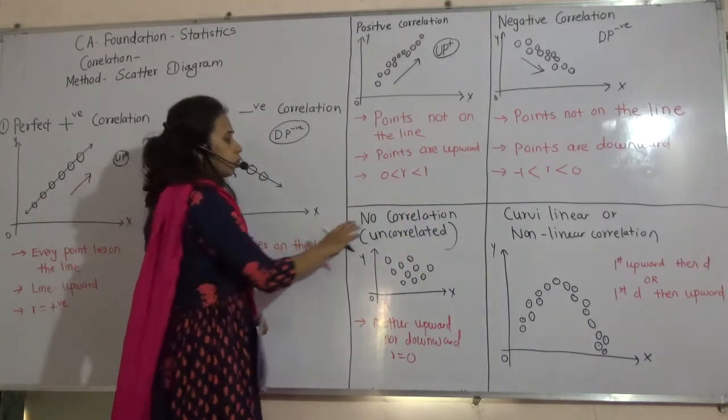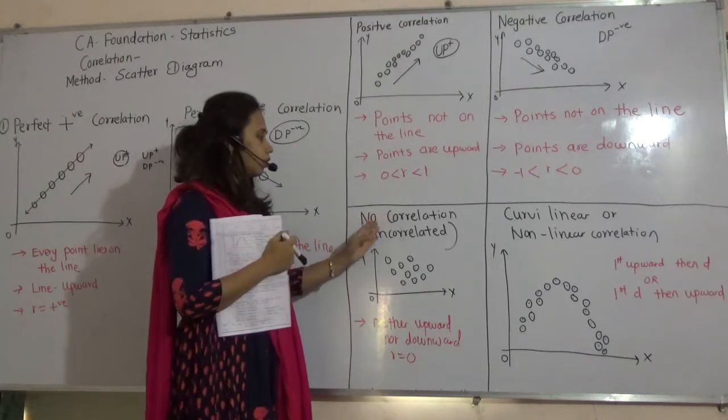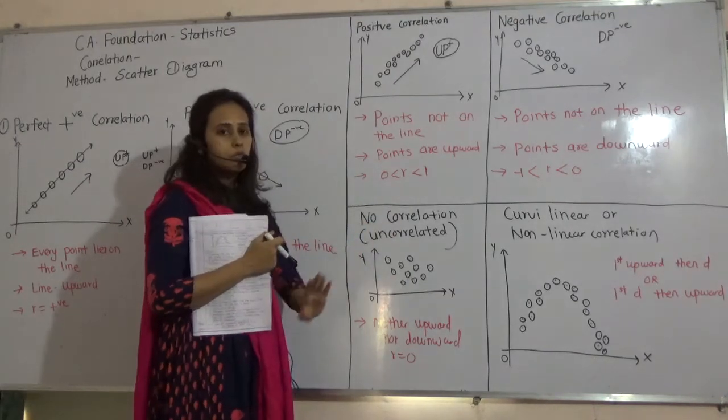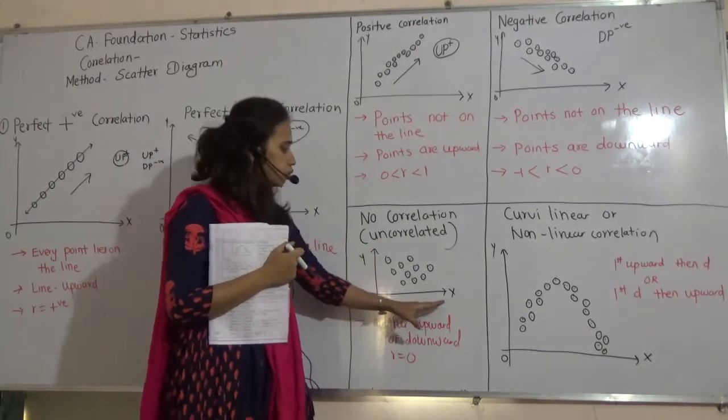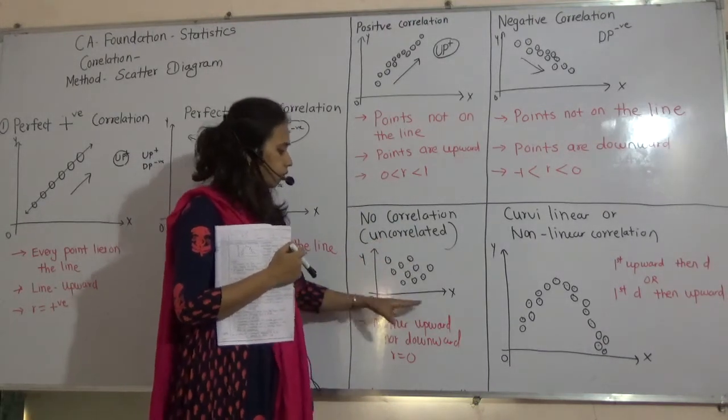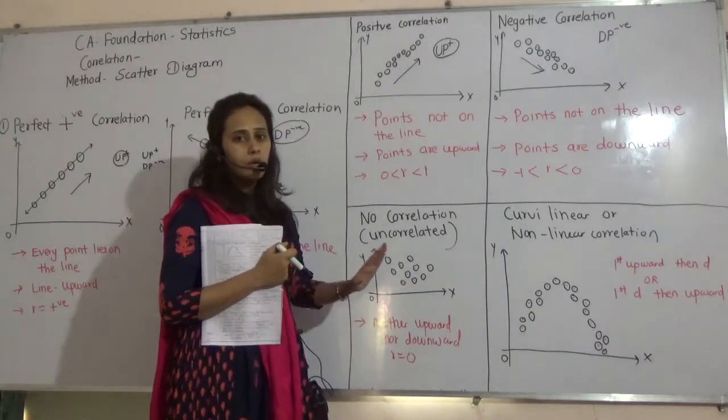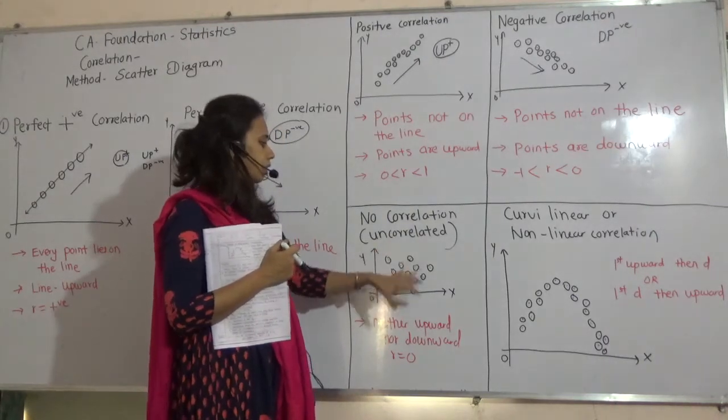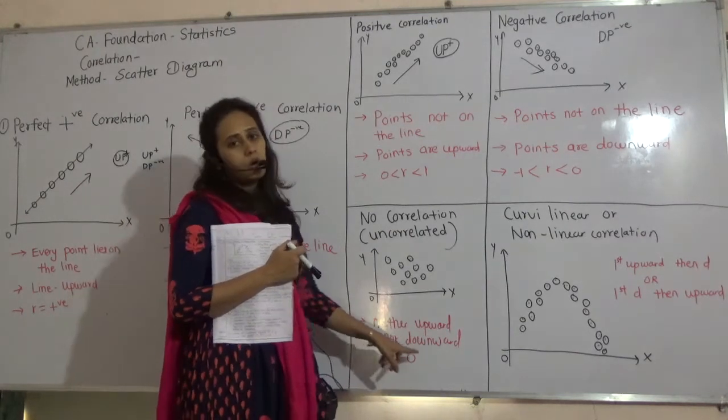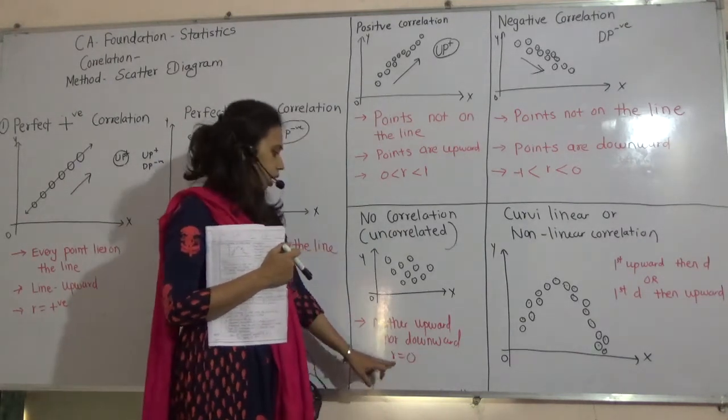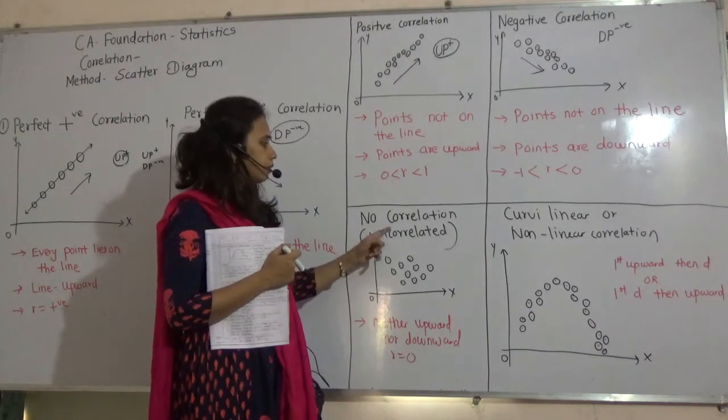Next is, no correlation. From there, you can see the meaning. No correlation means there is no relation at all. Uncorrelated. Means, two variables are there. There exists no relationship. That's why, there is no any sequence for this. Neither upward, nor downward. So, R is equal to 0. There is no correlation. That's why, they are called as uncorrelated.